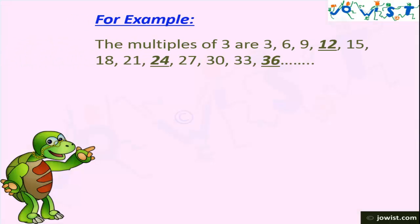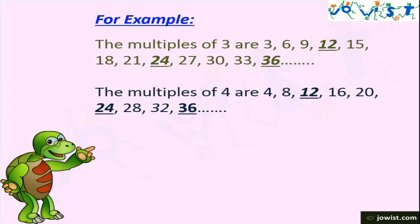For example, the multiples of 3 are 3, 6, 9, 12, 15, 18, 21, 24, 27, 30, 33, 36 and so on. And the multiples of 4 are 4, 8, 12, 16, 20, 24, 28, 32, 36 and so on.